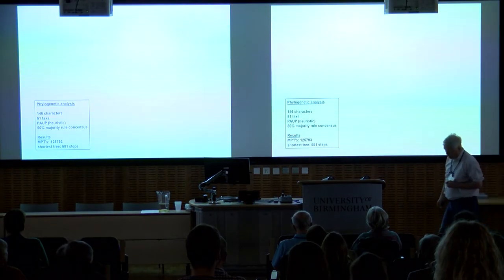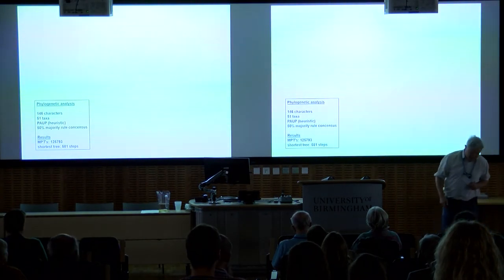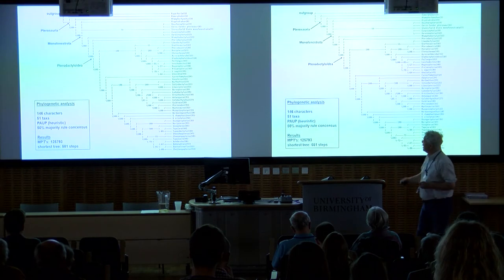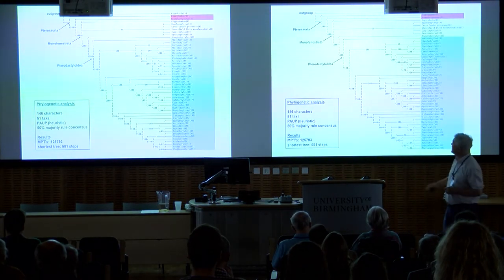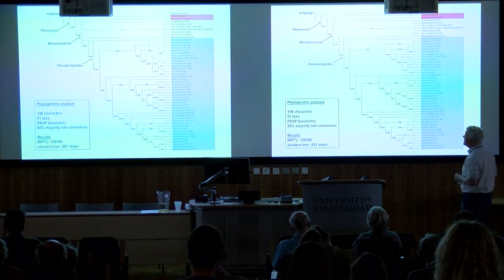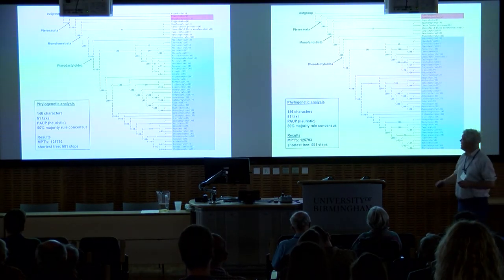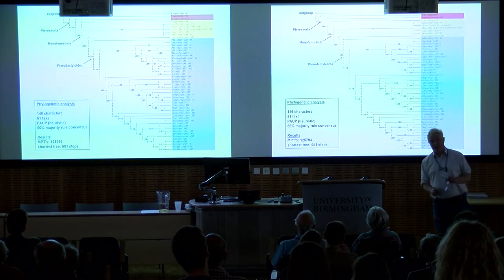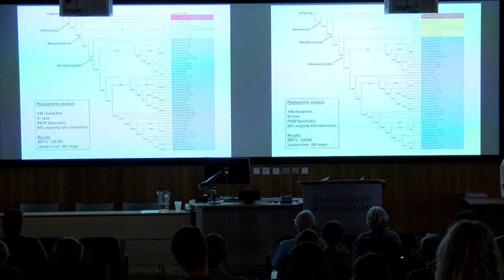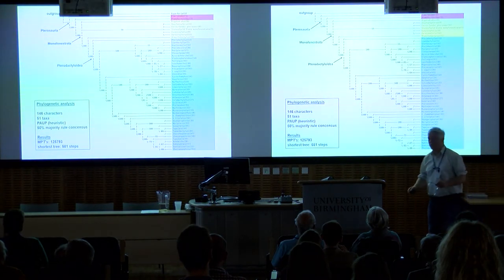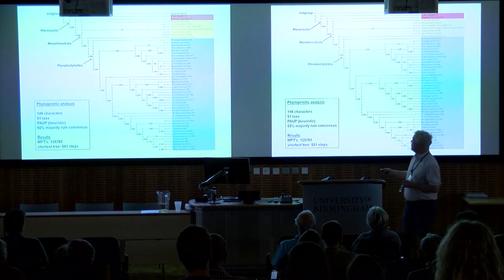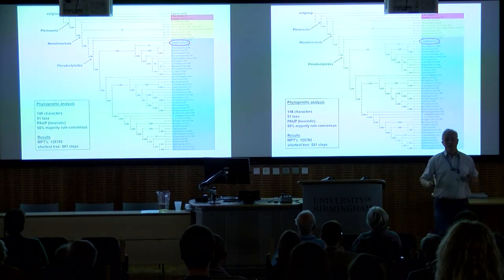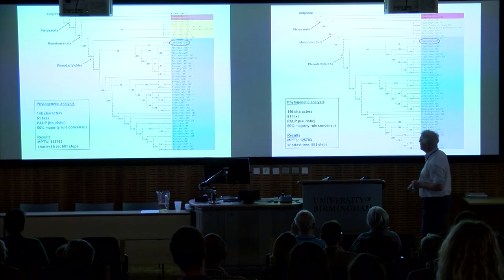What we need is a phylogenetic analysis to sort all these things out. What you're seeing here is part of a much larger analysis — do not try to read the taxon names, only worry about the colours. Basal forms are in red, pterodactyloids in blue. A magnificent seven fall out as monofenestratans, but they're basal monofenestratans. Technically we should call them non-pterodactyloid monofenestratans — it's a dreadful mouthful, so I'm going to call them basal monos for the rest of this talk. Interestingly, Liaodactylus does fall out as a pterodactyloid here, but bear in mind the caveats.